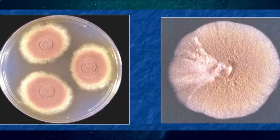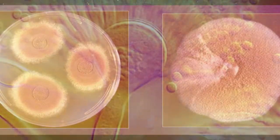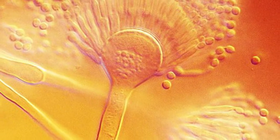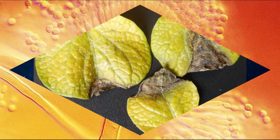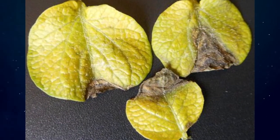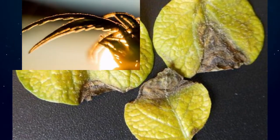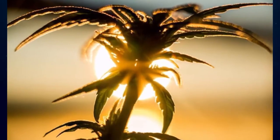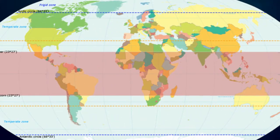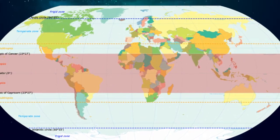Aspergillus pterus is a fungus found worldwide in soil. Although thought to be strictly asexual until recently, Aspergillus pterus is now known to be capable of sexual reproduction. This saprotrophic fungus is prevalent in warmer climates, such as tropical and subtropical regions.